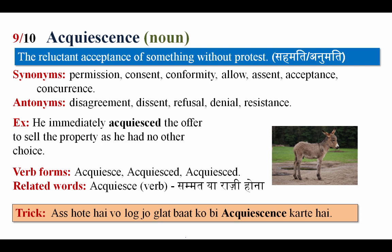Memory trick for acquiescence: 'ass' hote hain woh log jo galat baat ko bhi acquiesce karte hain — meaning foolish are those who accept even wrong things without protest. 'Ass' and 'acquiescence' sound similar, so use this to remember: jo galat baat ko bhi maan lete hain, woh acquiescence karte hain.